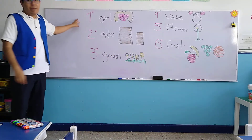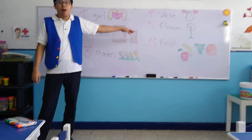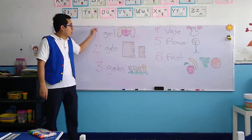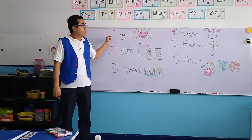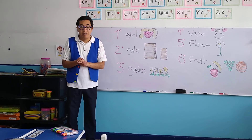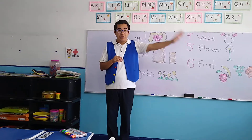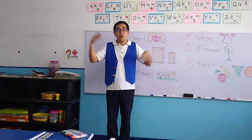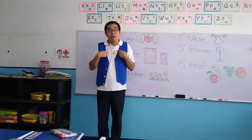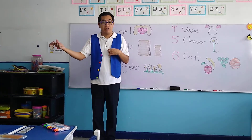First, remember that all of the words that appear here on the whiteboard are in ordinal numbers. Let's start with the first word. The first word says 'girl.' Now don't forget that we are sometimes either boys or girls. In the case of the teacher, I am a boy. In the case of the missus, those are girls.